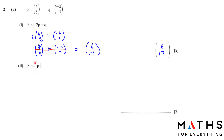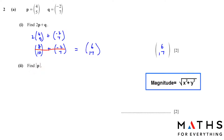Next, find the magnitude of p. We use the formula: magnitude = √(x² + y²), where the top number in the column vector represents x and the bottom represents y. So this equals √(4² + 5²), which gives us 6.40.